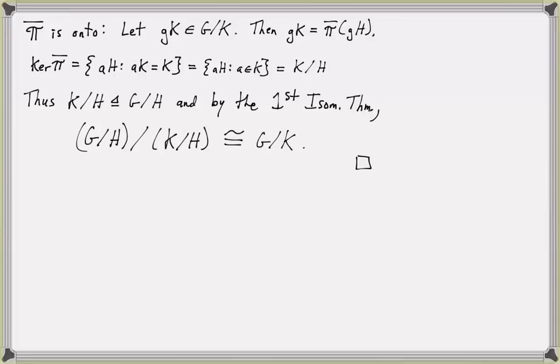That finishes the third isomorphism theorem. You can think of this final statement as similar to canceling a complex fraction: when you divide one fraction by another you invert and cancel. This theorem shows us that no new structural information is gained by taking quotients of quotient groups — G mod H mod (K mod H) is isomorphic to G mod K.